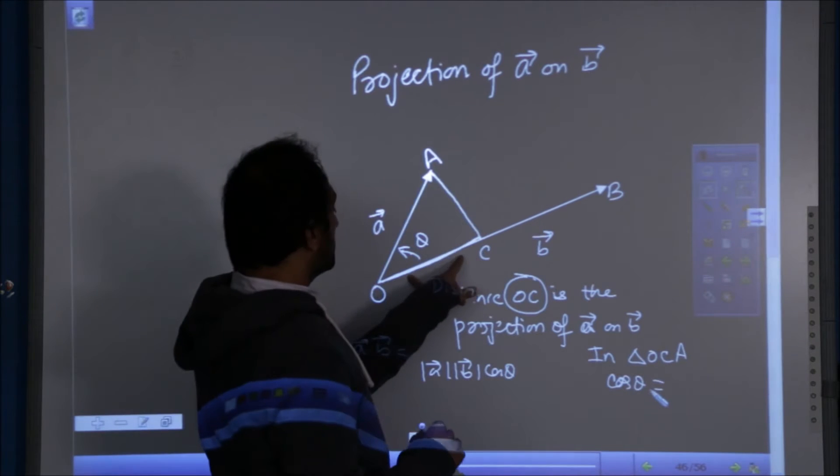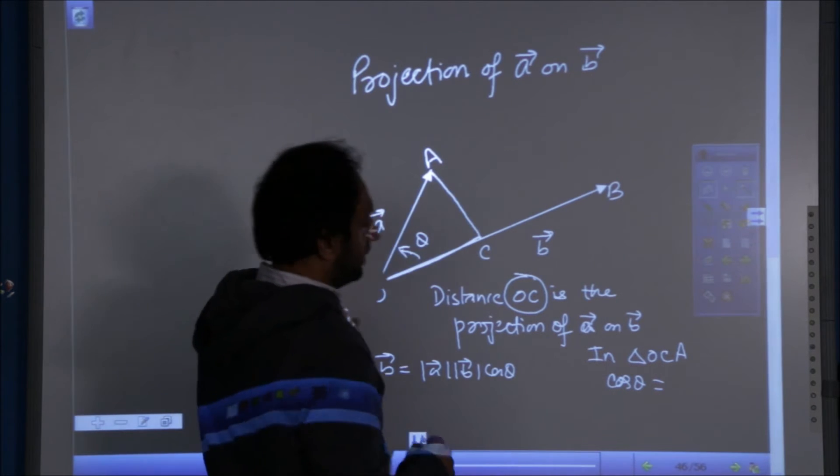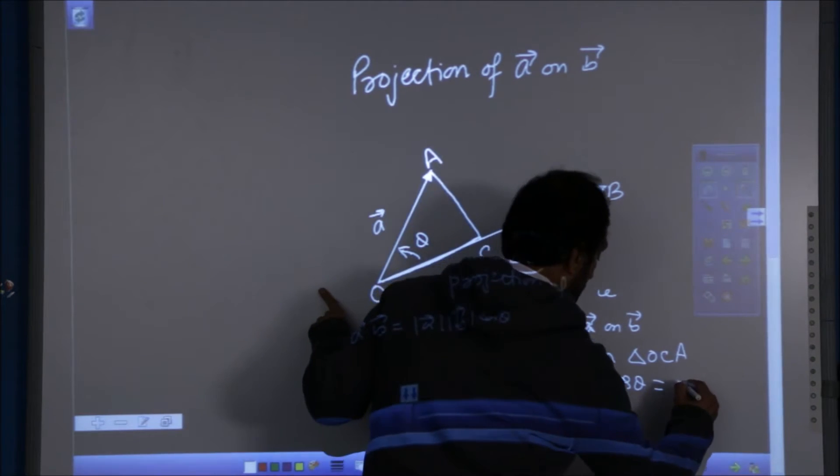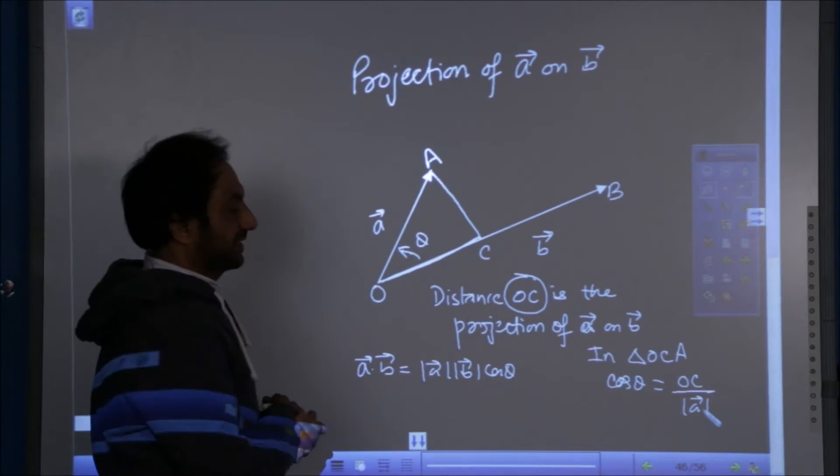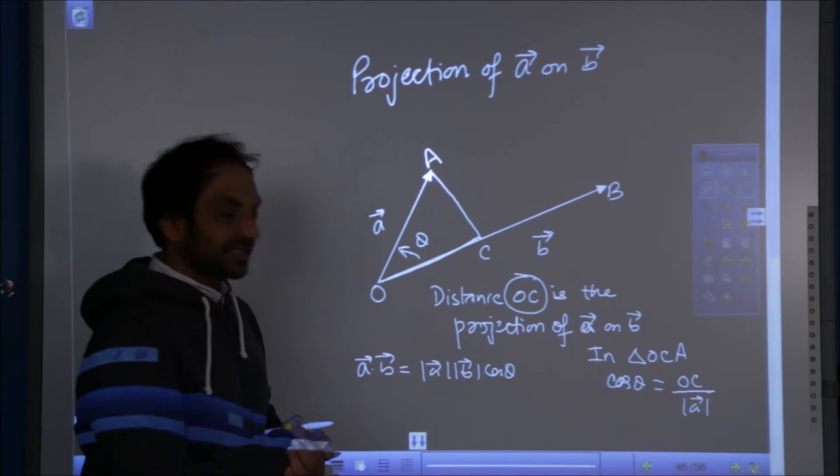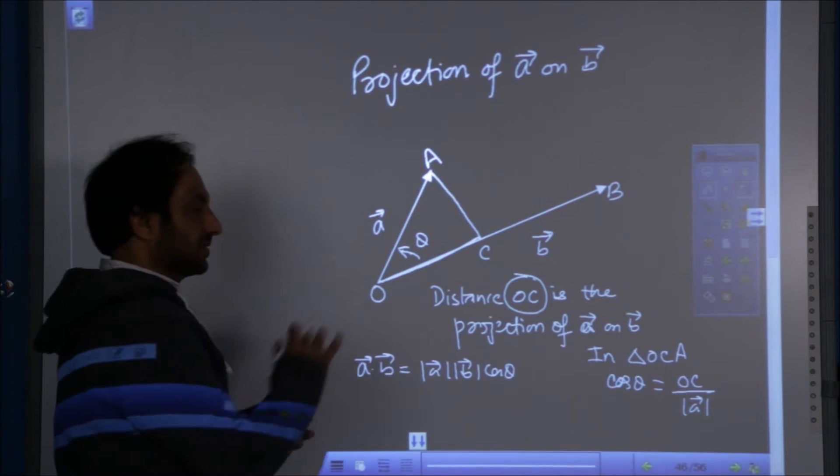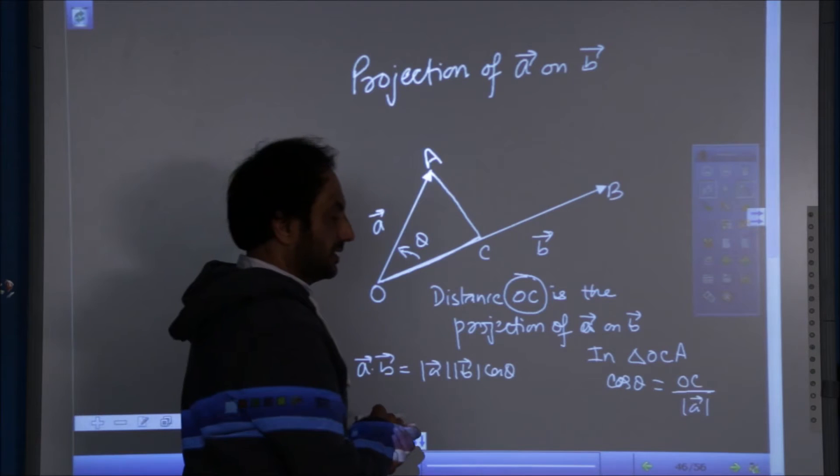Cos theta is the distance OC upon the hypotenuse, which is the length of the vector, which is itself the magnitude of A vector. So cos theta is OC by mod A.